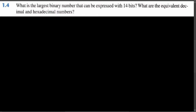The problem asks for the largest binary number that can be expressed with 14 bits, and its equivalent decimal and hexadecimal numbers. In the binary number system there are only two digits: zero and one. The largest binary number expressible in 14 bits is going to be 14 ones, because one is the biggest digit. So we have 14 ones — one through fourteen — with base two.